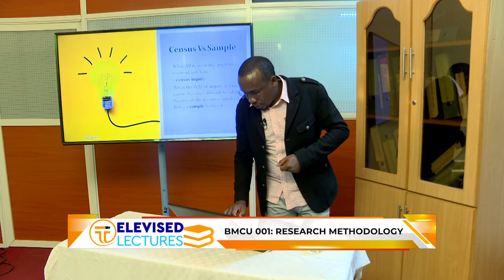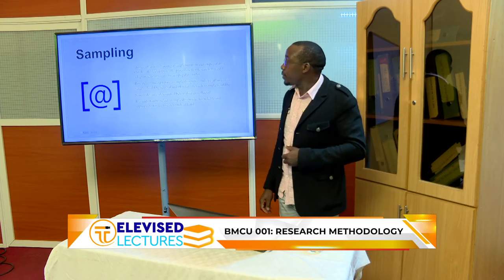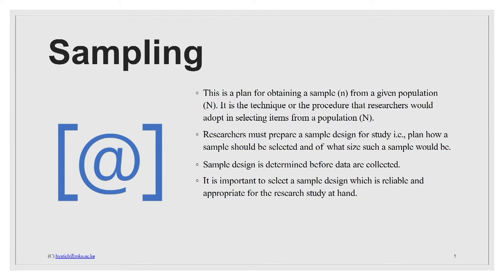Now let's look at sampling. When the population is too large, especially for a student embarking on an academic journey, and that population is too large to be accessed, then you have to sample. Sampling as an action verb becomes a process — a process of obtaining a sample. In statistics, we denote the sample with small n and the population with capital N, which you might use in your analysis.